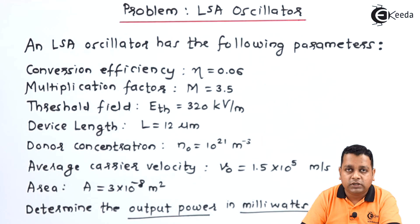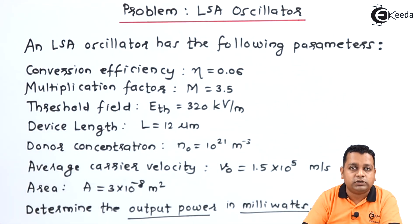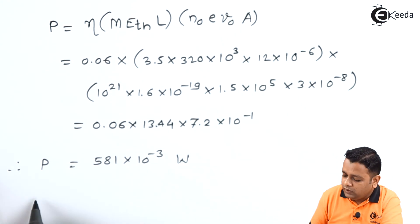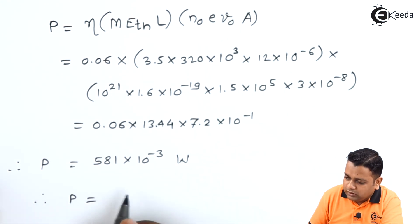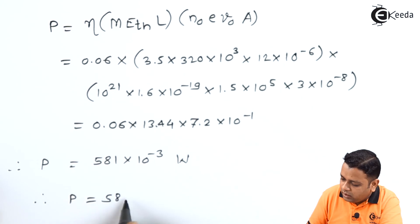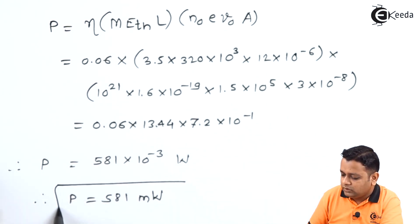As per the problem statement we require the output power in terms of milliwatt. Therefore 10 raised to power minus 3 we can absorb and express the value in terms of milliwatt. So finally we write the output power P is equal to 581 milliwatt. The value is outlined here.